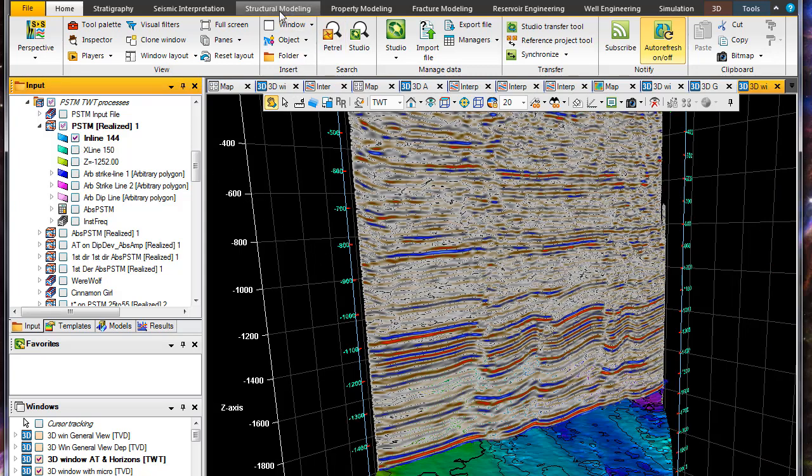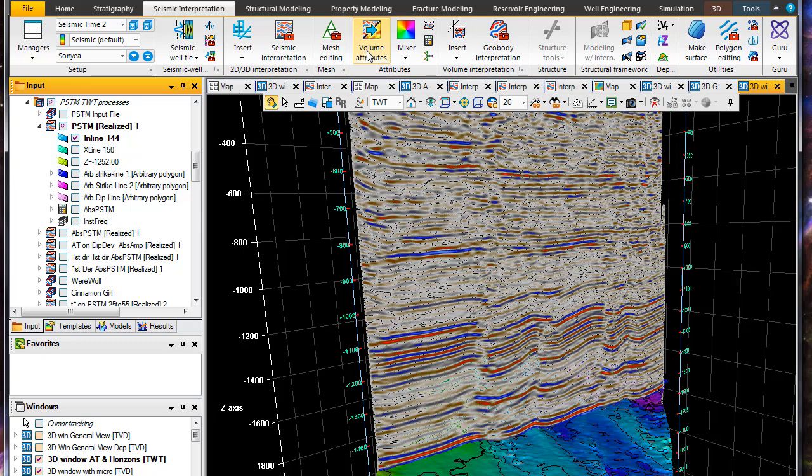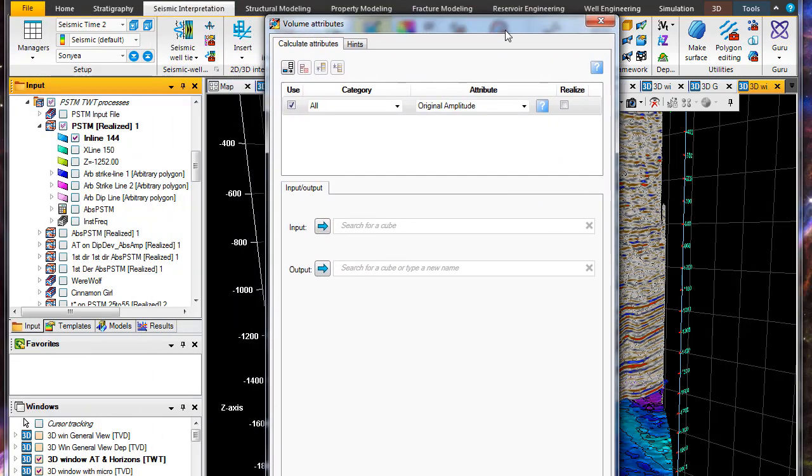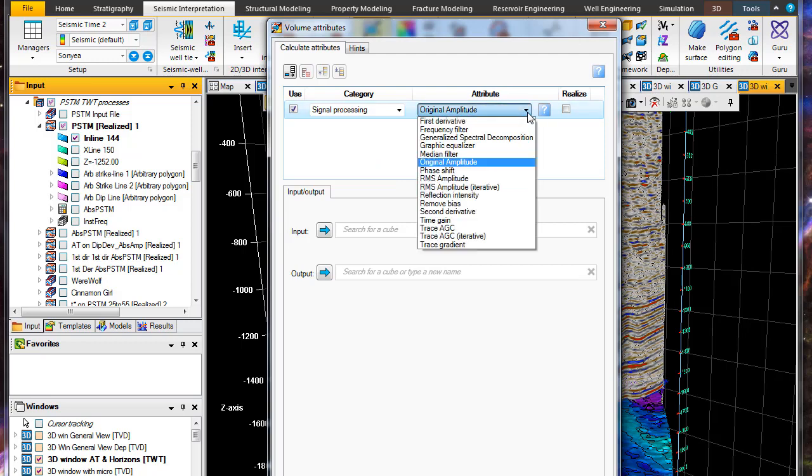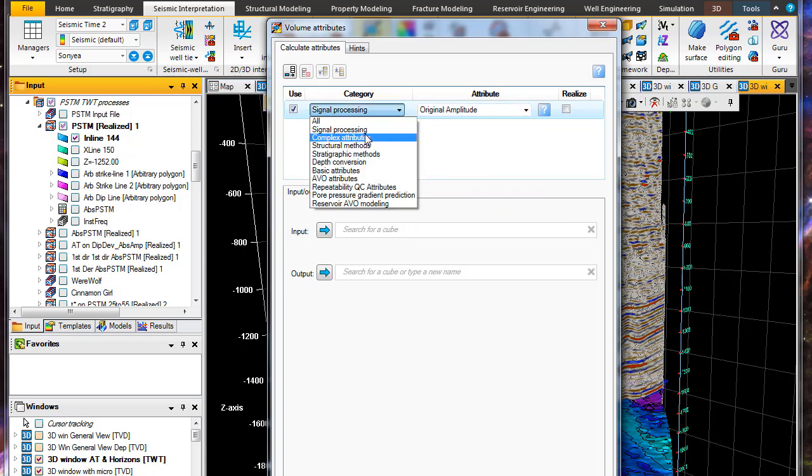I've already done the calculations, but from the seismic interpretation window, we have volume attributes. We have several categories of attributes: signal processing, amplitude, spectral decomposition, median filter, RMS amplitude, gains, AGC (automatic gain control), and we're going to spend time talking about the complex trace attributes - instantaneous frequency, phase, quadrature amplitude, envelope, and so on.